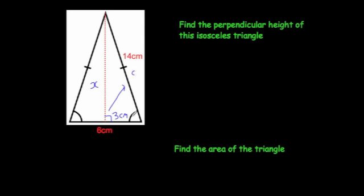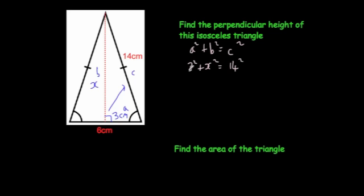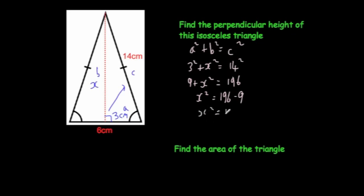It doesn't really matter which way you label a and b. Writing Pythagoras' theorem: a squared plus b squared equals c squared. Substituting in the numbers: 3 squared plus x squared equals 14 squared. 3 squared is 9, and 14 squared is 196, so 9 plus x squared equals 196. To find x, we take away 9 from both sides: x squared equals 196 minus 9, which gives x squared equals 187.